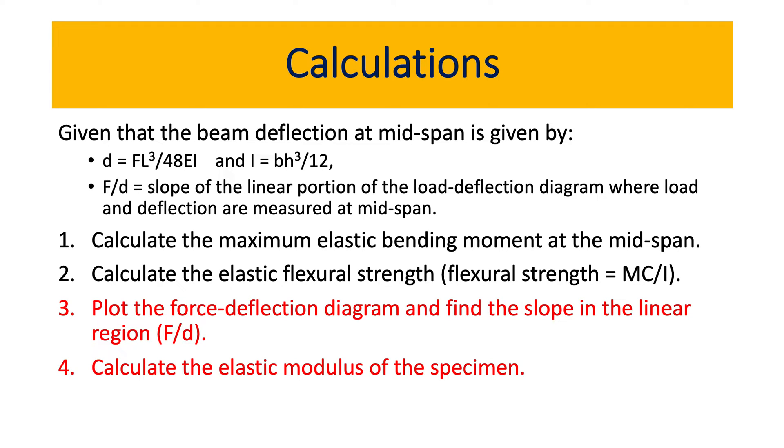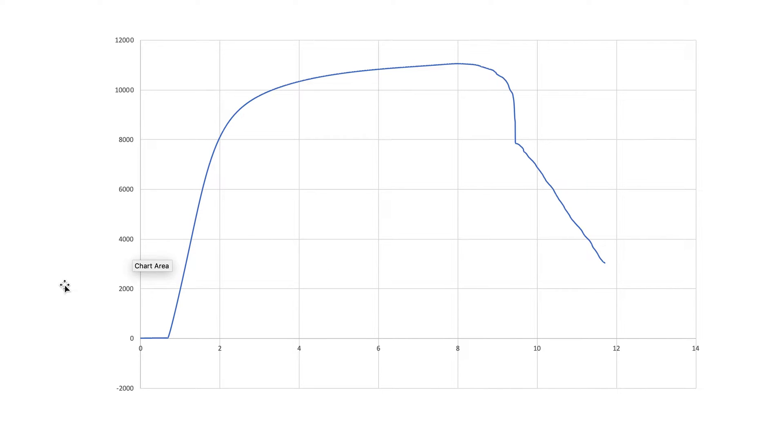The first one is plotting the force deflection diagram and finding the slope in the linear region. This is the data set that you have received for the specimen. This is the elastic region. You need to plot this diagram and find the slope in this region. So that's number three.